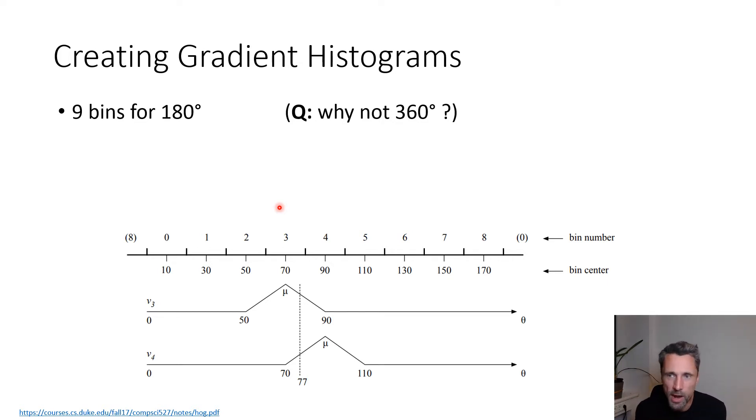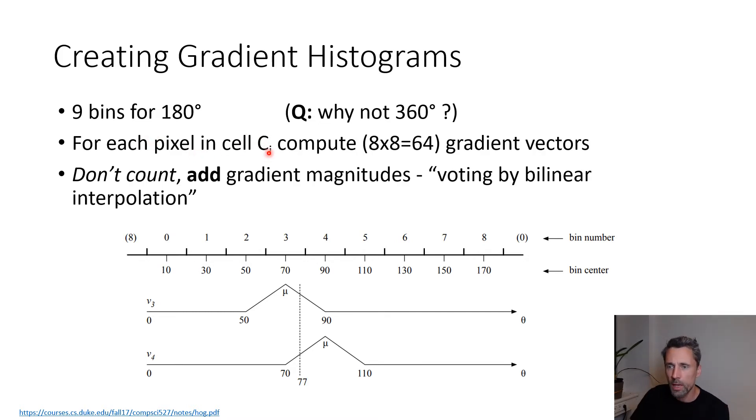Before I show you how to create the block descriptor and from that the whole descriptor for the ROI, we need to talk about what is a gradient histogram and how does HOG create these for each of those cells. First of all, we define the discretization into nine bins, corresponding to 20 degrees each. Bin number zero collects gradients from zero to 20 degrees, the next 20 degrees go in bin number one, and so on. My first question for you is: why don't we use the full two pi? For each pixel in a given cell - in this eight by eight pixel cell - we compute the gradient vectors and then the gradient orientation. Then we don't count, we add gradient magnitudes.